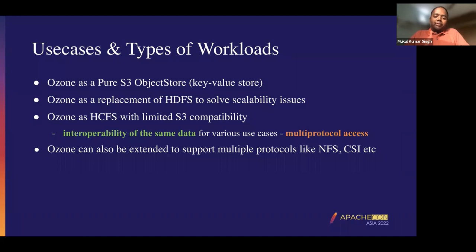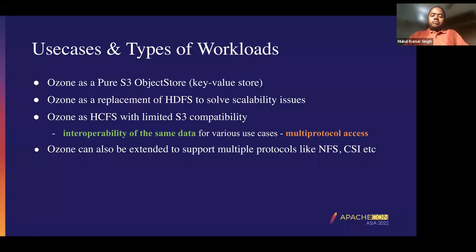Before moving forward, I'd like to recap that the two most prominent access patterns in our system are using the S3 protocol or using the OFS file system client. These are really the two most important use cases for us and what we have really been trying to optimize for. The most obvious and common use case is using Ozone as a replacement for HDFS, where HDFS currently runs into scalability problems and cannot scale beyond 250 million files.